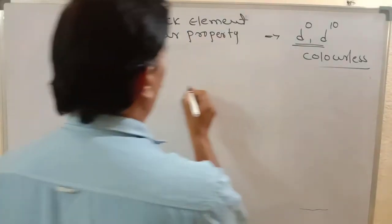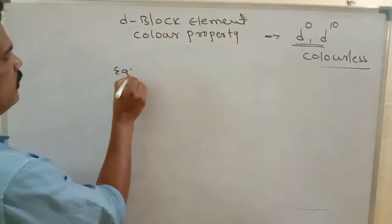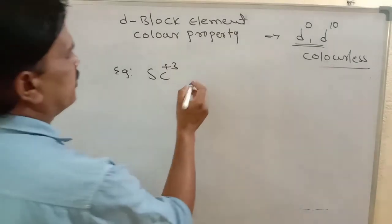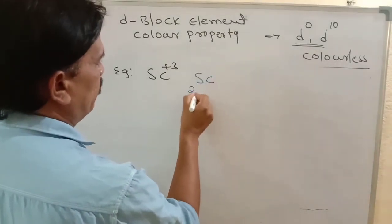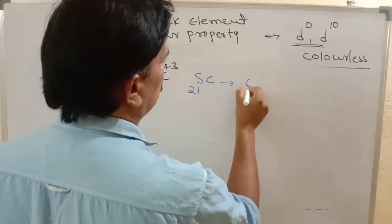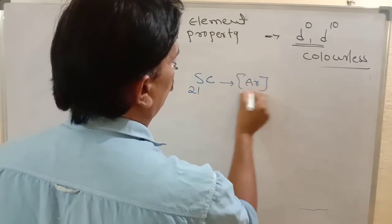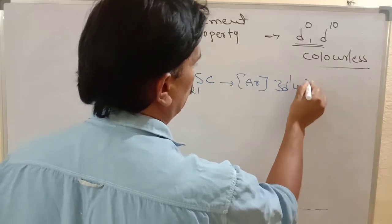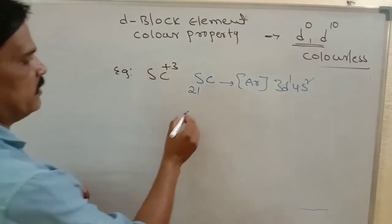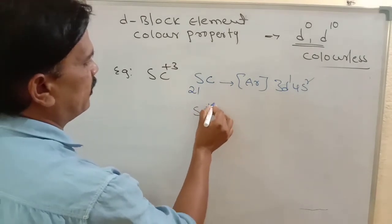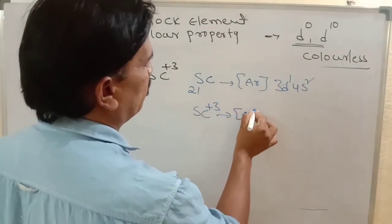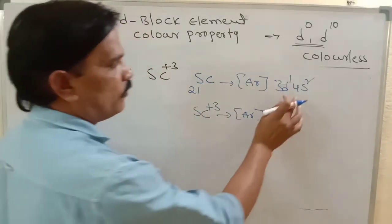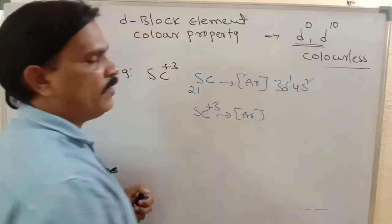For example, take Scandium³⁺. Scandium has atomic number 21. Its electronic configuration is [Ar] 3D¹ 4S². For Sc³⁺, we have to remove 3 electrons — two from the 4S orbital first, then one from the 3D orbital.